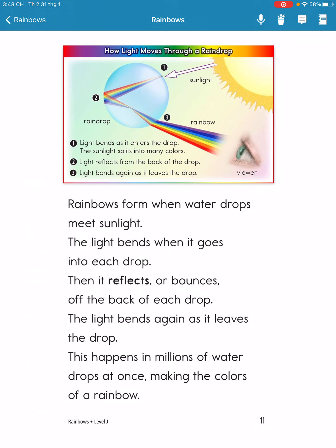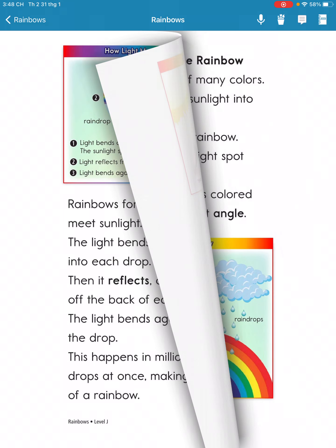A rainbow forms when sunlight enters water drops. The light bends as it goes into each drop, reflects off the back of each drop, and bends again as it leaves. This happens in millions of water drops at once, making the colors of a rainbow.